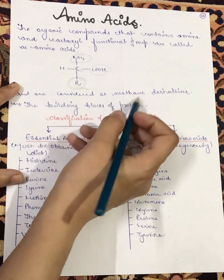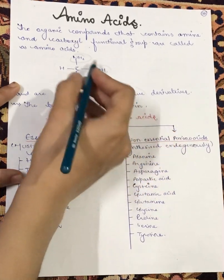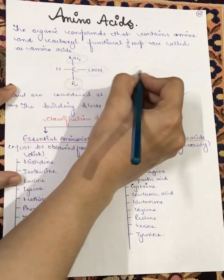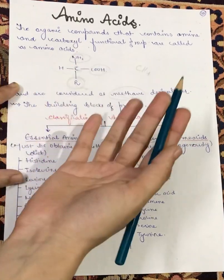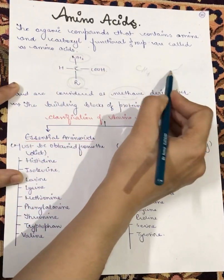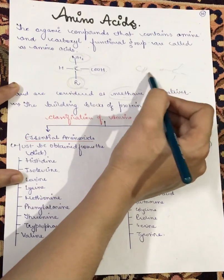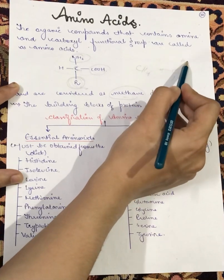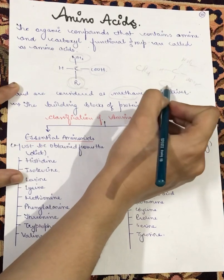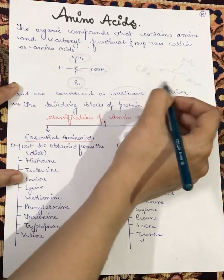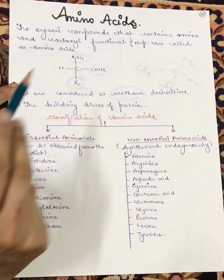Amino acids are considered methane derivatives. Methane is CH4, and the derivative means it follows the methane structure. One hydrogen is kept as-is, one H substitution is NH2, another H substitution gives the carboxyl group — that is why we call it a methane derivative.